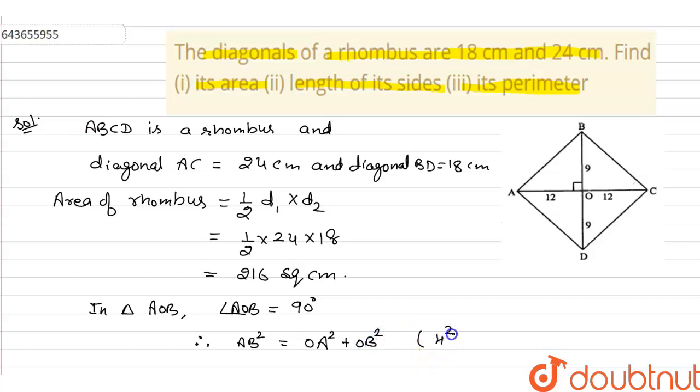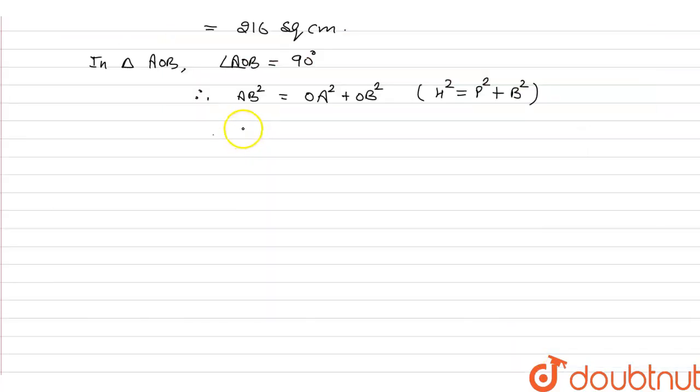By Pythagorean theorem, we know that hypotenuse square is equal to perpendicular square plus base square. Therefore, AB square is equal to 12 square plus 9 square, because diagonals of rhombus bisect each other, which is equal to 144 plus 81.